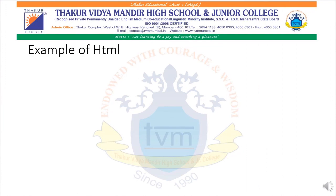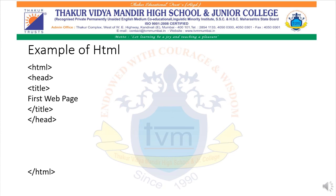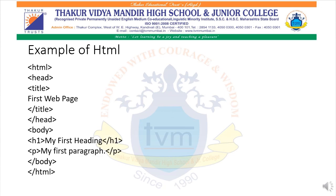In this slide, I am writing a short program. First, I write the open and close HTML tag. Within the HTML tag, I write the open and close head tag. Inside the head tag, I write the open and close title tag, giving the title 'first web page'. After the close head tag, I write the open and close body tag. Within the body tag, I write the open and close h1 tag — the heading tag — used to give a heading to the text: 'my first heading'. Below the heading tag, there is an open and close p tag — the paragraph tag — used to format text in a proper paragraph form. In the next slide, we will see its output.